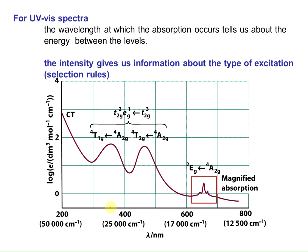Where the maxima occur relates to the energy associated with the electrons being absorbed. The intensity — the y-axis — if we're talking about Beer's Law, A equals EBC. B is the path length, C is the concentration. If we keep those parameters constant, we're just looking at the molar absorptivity. That molar absorptivity gives us information about the type of excitation that's occurring, which is why it's important to find the molar absorptivity.